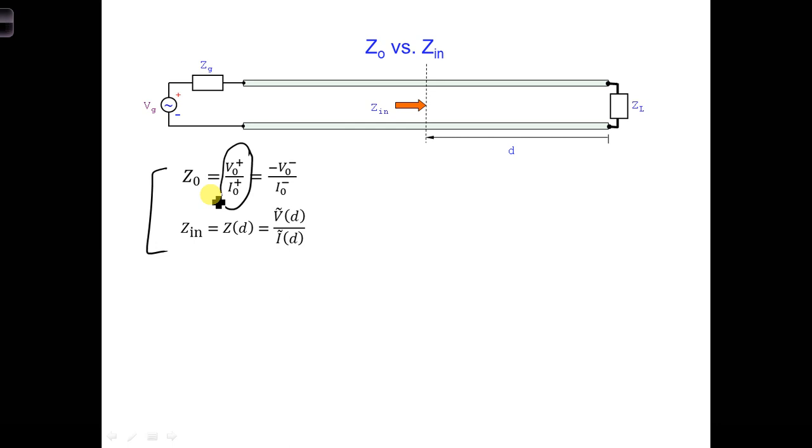On the other hand, the input impedance is a value that is useful in the sinusoidal steady state since all the reflections have already happened. Z-in is the ratio of the total voltage, which accounts for both the positive and the negative traveling waves, to the total current. So Z-in is equal to Z at position D, total voltage to total current.